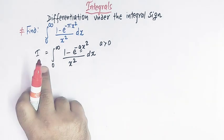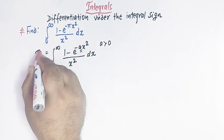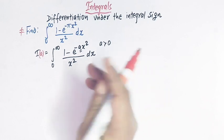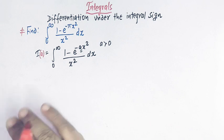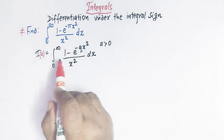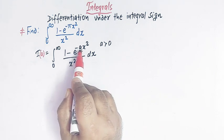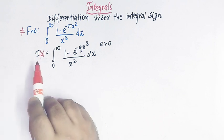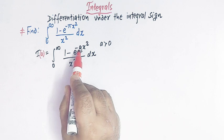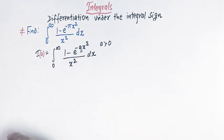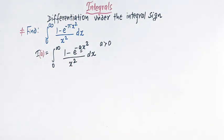We will start with this integral, and this integral is a function of a. While applying the method of differentiation under the integral sign, we take the integral as a function of the variable which was introduced. Now we'll differentiate this integral with respect to this variable a, keeping x as constant, which means we have to make use of partial differentiation.